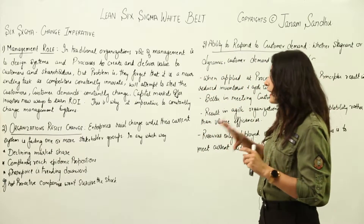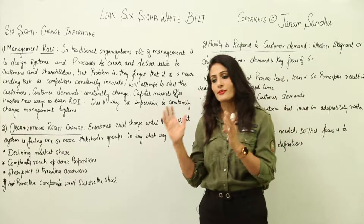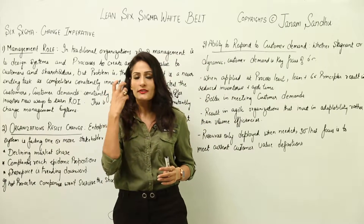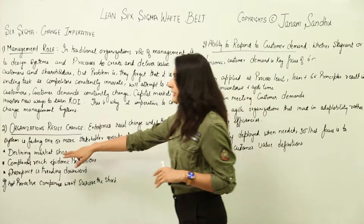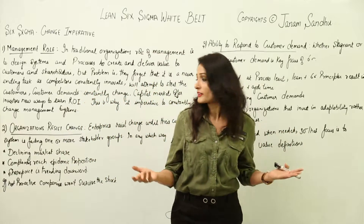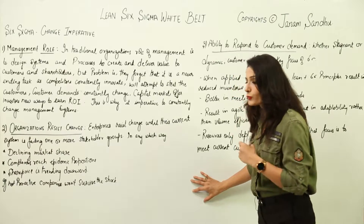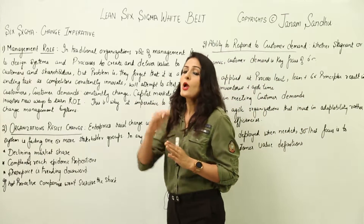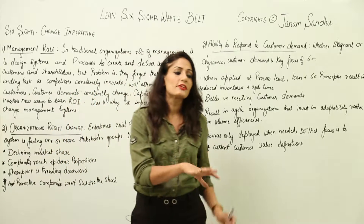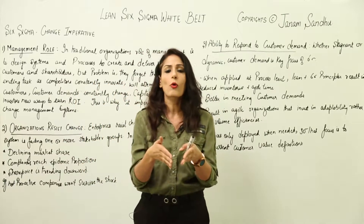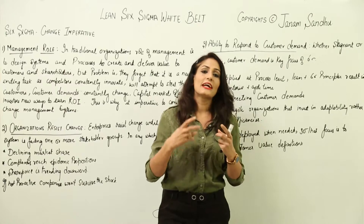Enterprises resist change until their current system is failing one or more stakeholders. Companies don't like to change their systems, processes, or teams until they realize that their stakeholders are not happy or their products are failing — whether through declining market share, customer complaints reaching epidemic proportions, or share price trending downward. Six Sigma teaches us we should not be reactive. Reactive means defects happen and then you try to fix them.